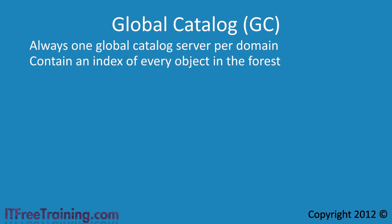Think of a global catalog server as an index at a library. The index gives you an idea what is in the book and more importantly where to find it if you want to know more.